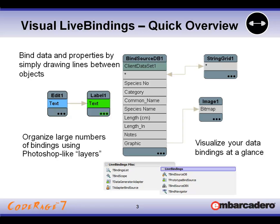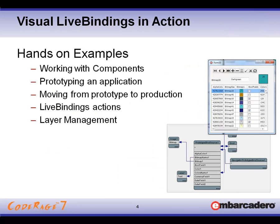With visual LiveBindings, we've also introduced several new components. One we're going to go over today is the prototype bind source component, which allows you to quickly prototype an application and then go from prototyping to production by switching the data source. Today's session will show hands-on examples ranging from working with components, prototyping an application, moving from prototype to production, working with LiveBindings actions in FireMonkey applications, and layers management.